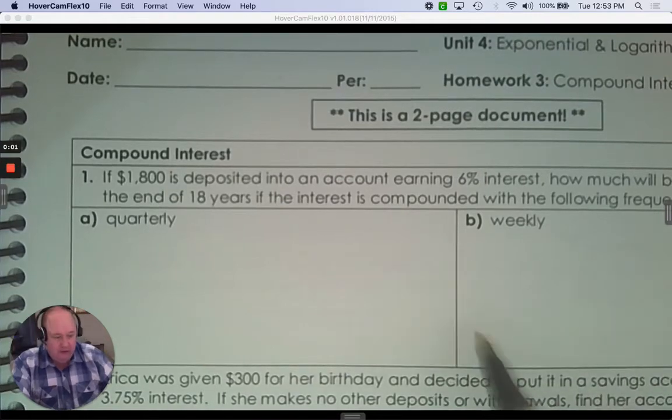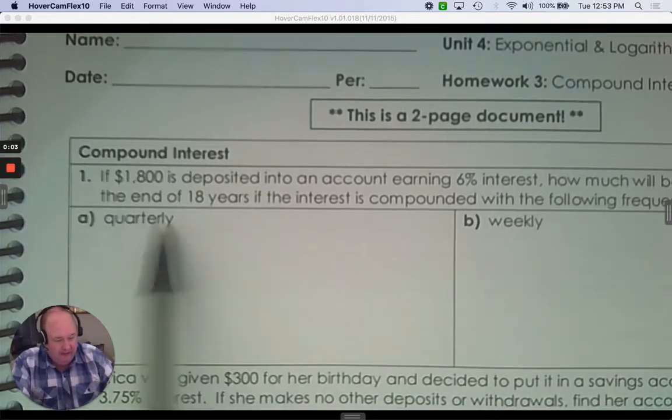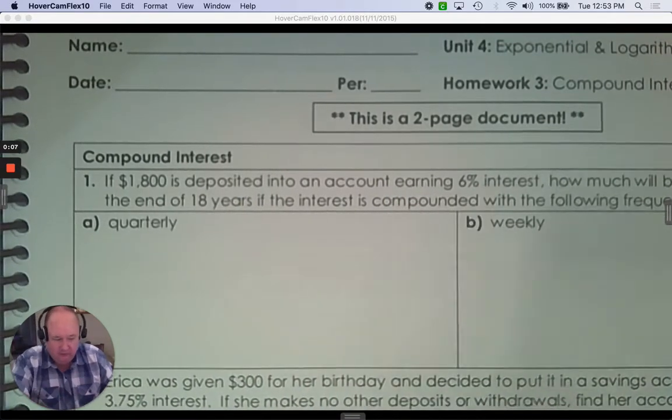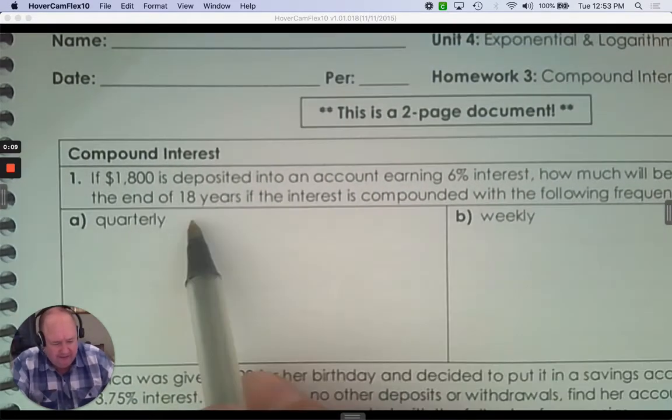This is your homework for compound interest. So $1,800 is deposited into an account earning 6% interest. How much will be in the account at the end of 18 years?